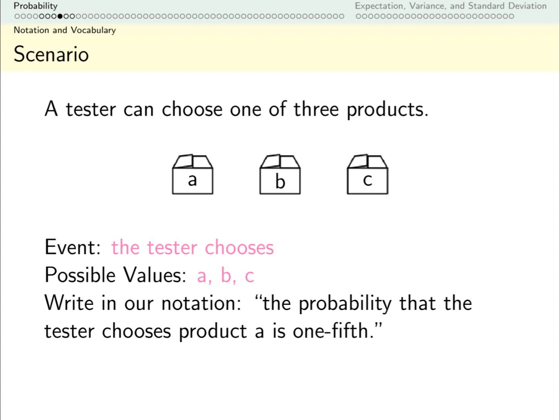Now using our notation, I want you to write the probability that the tester chooses product A is 1/5. Probability is PR. We have some event. We like to give them uppercase names. Let's call this X. The probability this event results in the value A. A probability is a number between 1 and 0, and in this case we're saying it's 1/5. So maybe we had a hundred people choose a product and 20 of them choose A.